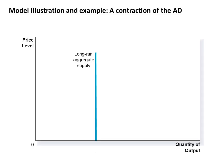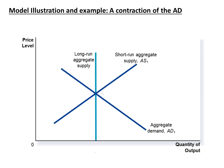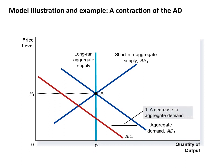Let's analyze the following model, which illustrates what happens when we have a contraction of aggregate demand. We start at equilibrium point A, with price P1 and quantity produced Y1. Then we have a contraction of aggregate demand — for example, because of less consumer confidence. For a period of time, we move to point B, where prices are lower but we have less production, which means more unemployment.